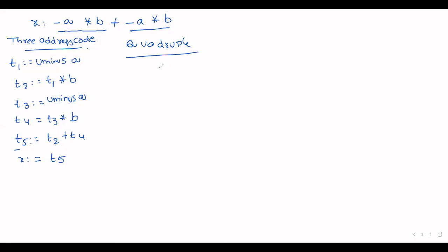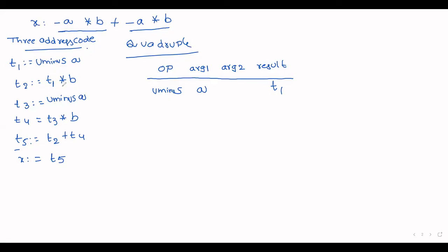Now represent this in quadruple form. The quadruple consists of four fields: op, argument one, argument two, and result. Step by step: first we are performing unary minus on a, so operator is unary minus, argument one is a, no argument two, and result is stored in t1. Next, operator is multiplication, first argument is t1, second argument is b, and result is stored in t2.